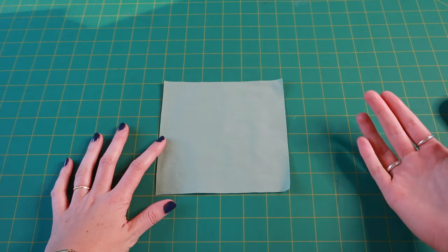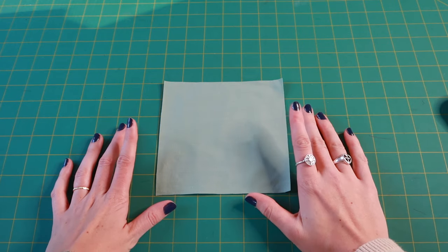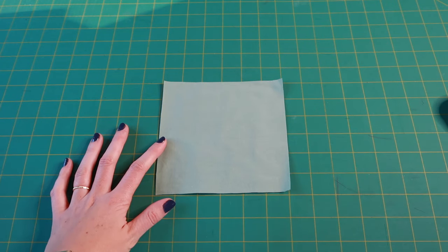We're going to take two pieces of fabric and sew them together. So we're going to take this 6 inch square and we're going to cut it in half down the middle.